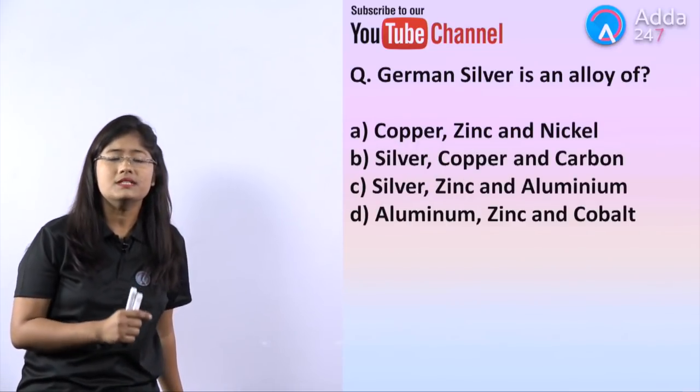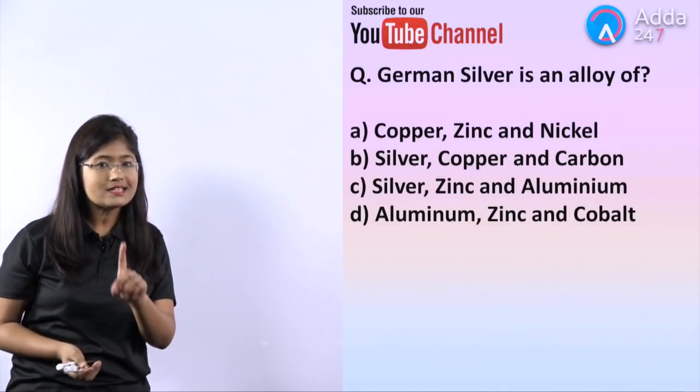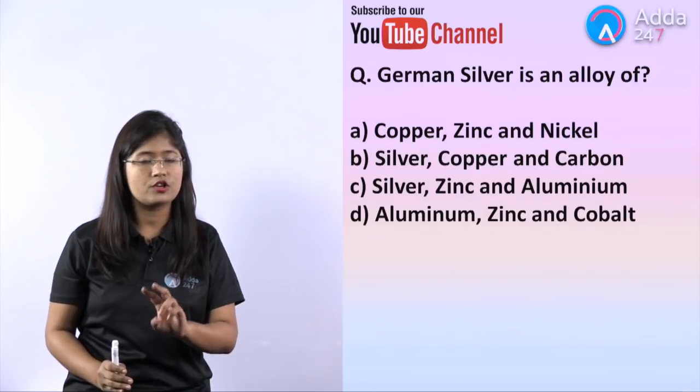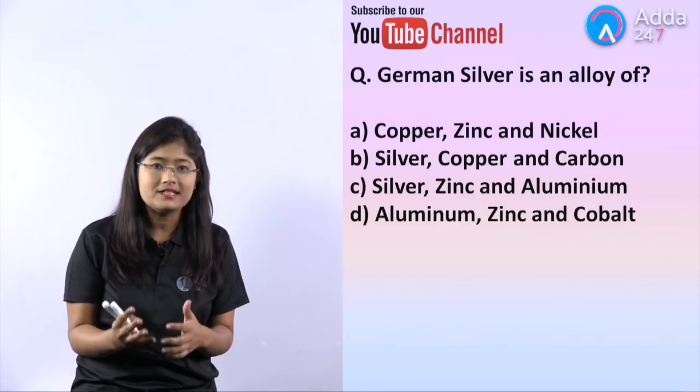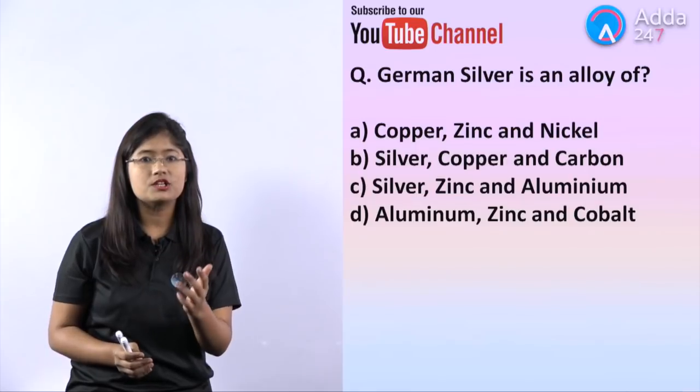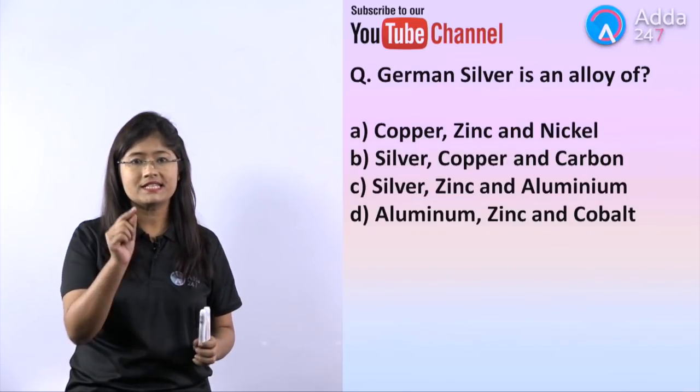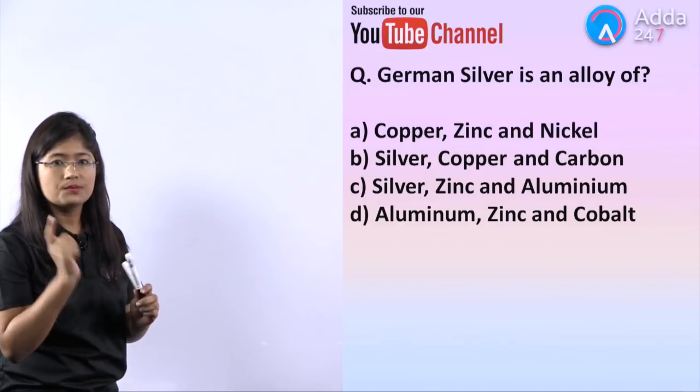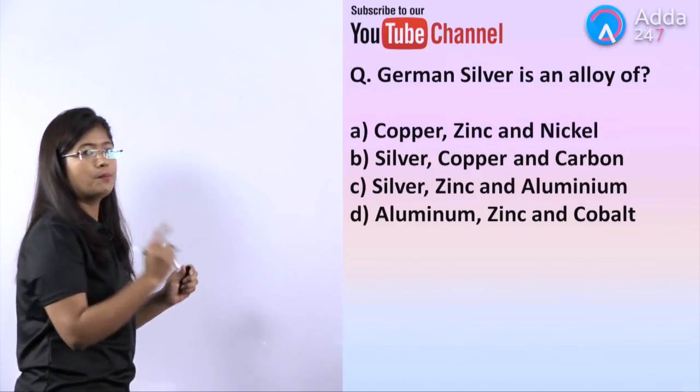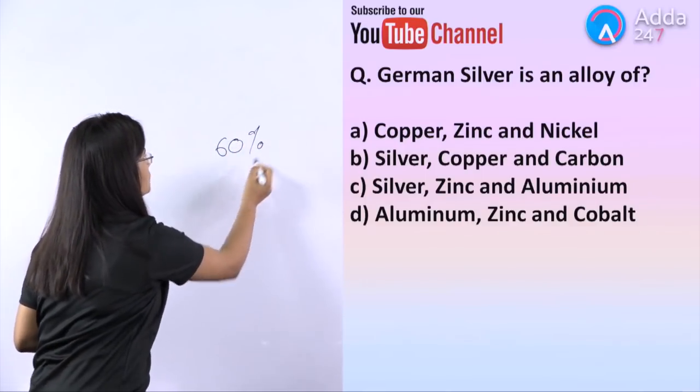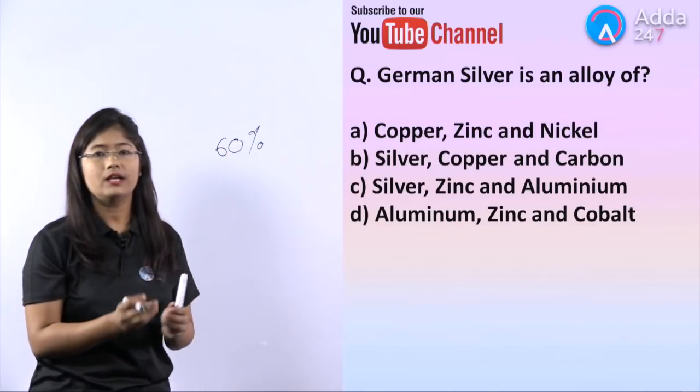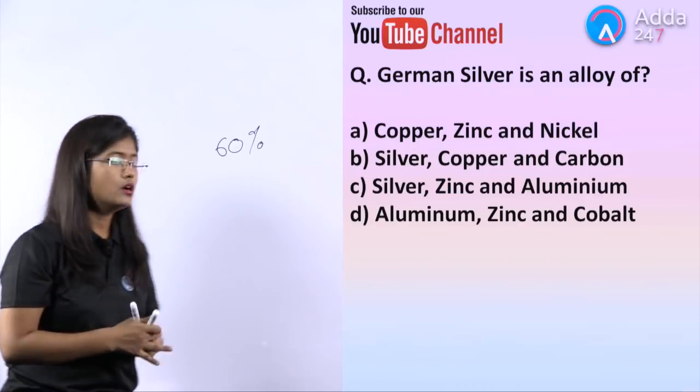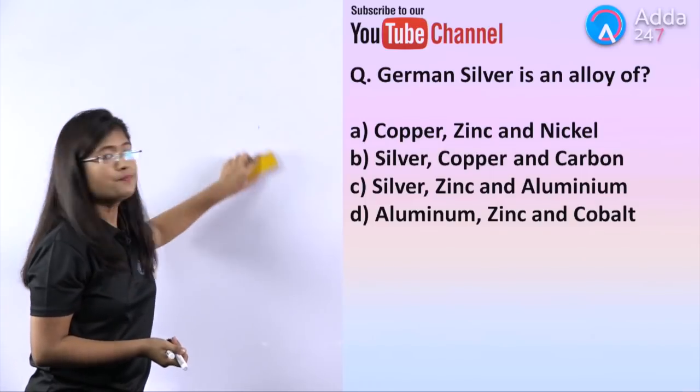The next question is: German silver is an alloy of? This is a question from alloys which you have done for your SSE examination. German silver is an alloy of copper 60 percent, zinc and nickel 20 percent each. Option A will be your correct answer.